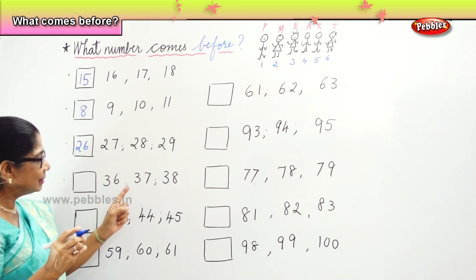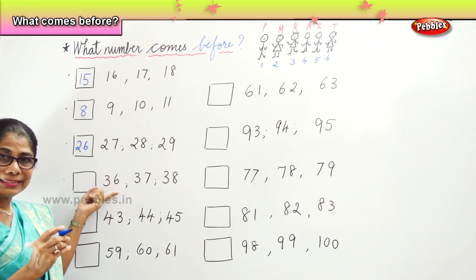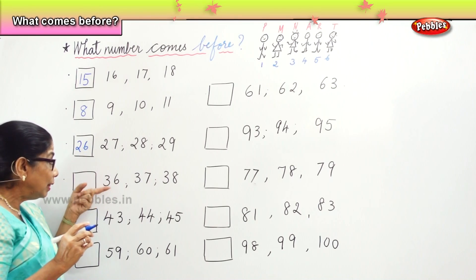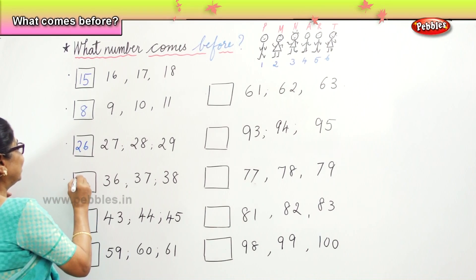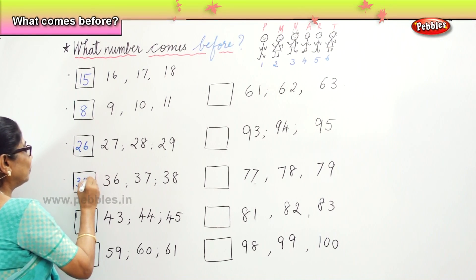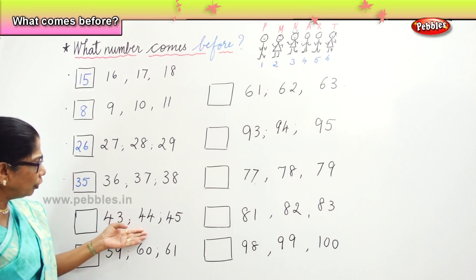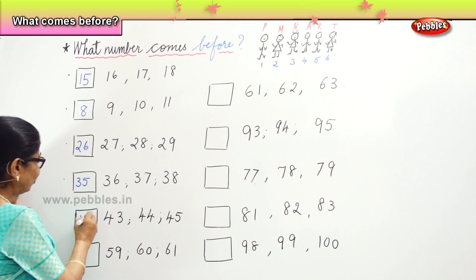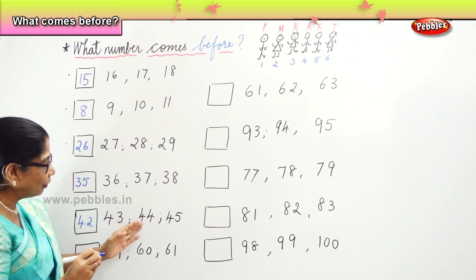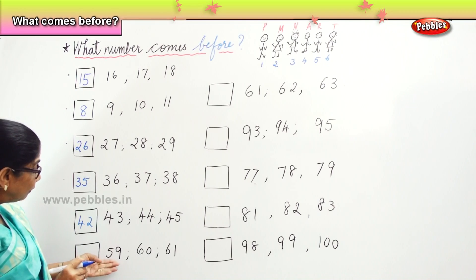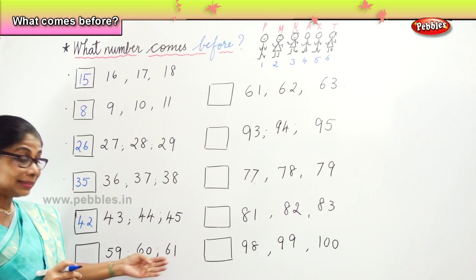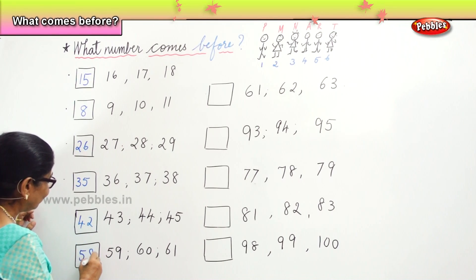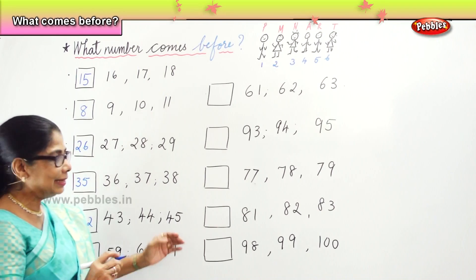Next we have 36, 37, 38. Look at the second number 5 — before 6 is 5, so 35, 36. Very good. Now 43, 44, 45 — before 3 is 2, so before 43 is 42. Now again, before number: 59, 60, 61 — before 9 is 8, so 58. See: 58, 59, 60, 61.